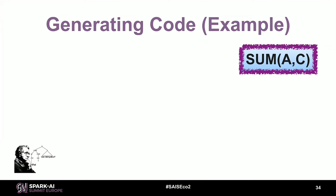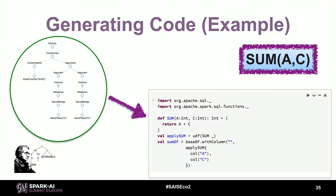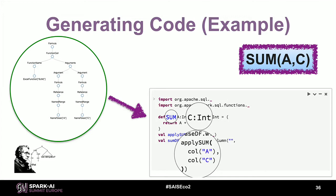Let's look at an example in more detail. We have a simple Excel formula — basically summing the contents of two columns, A and C. This is the parse tree: we have the function name 'sum', the token A, and the token C. As we traverse the tree and visit different nodes, we encounter C highlighted, and the other token A, and we generate code that sums A and C — those two columns in a table.